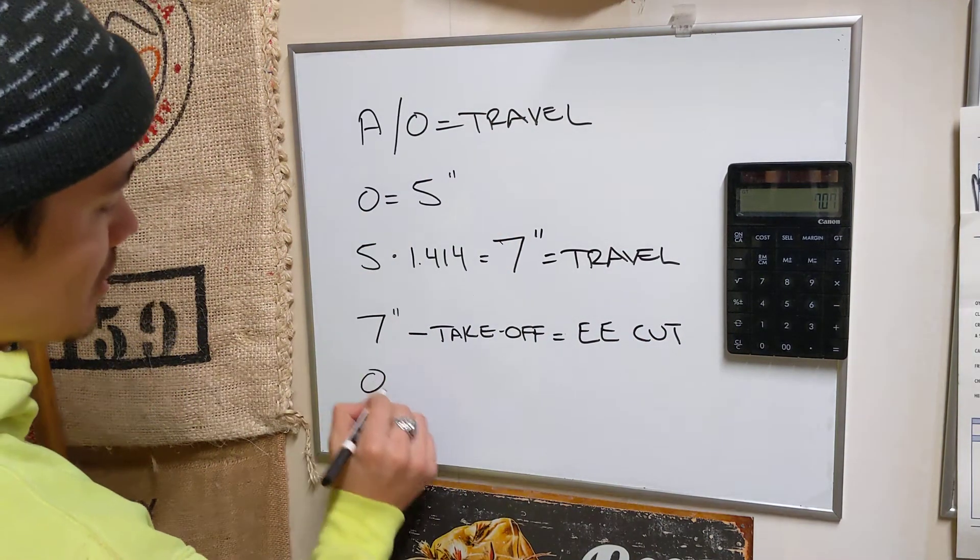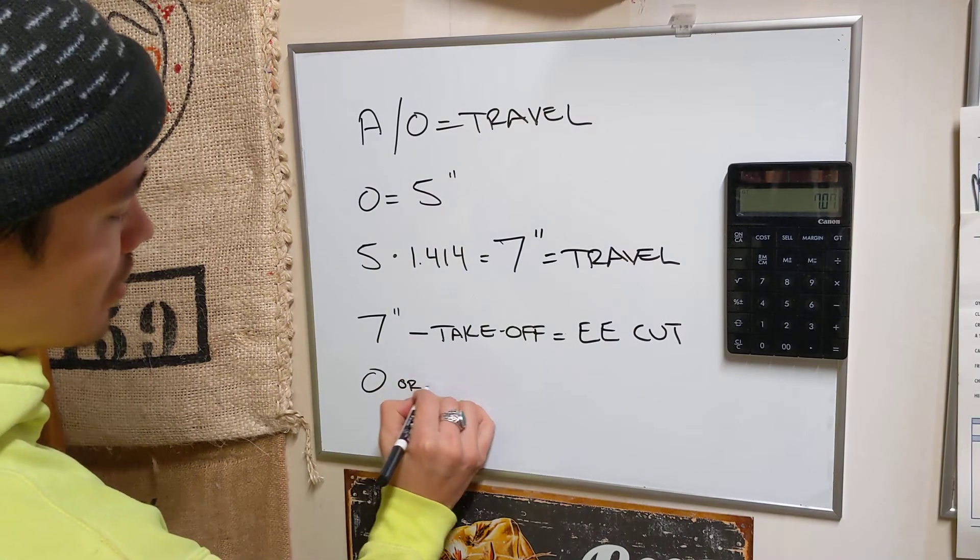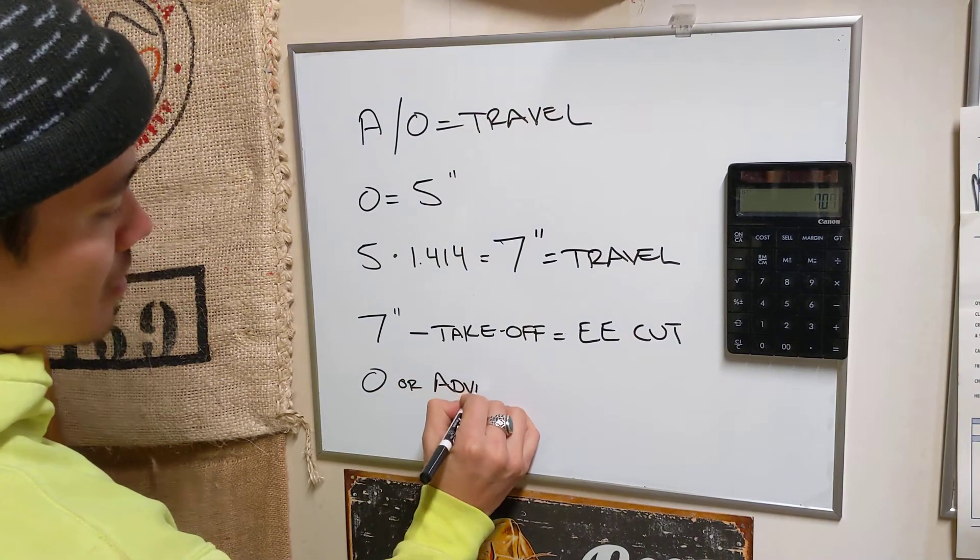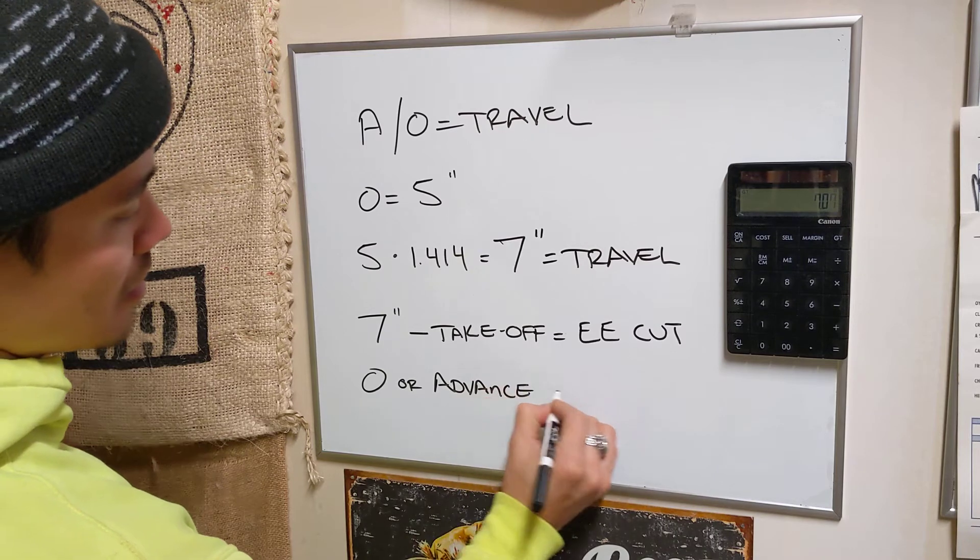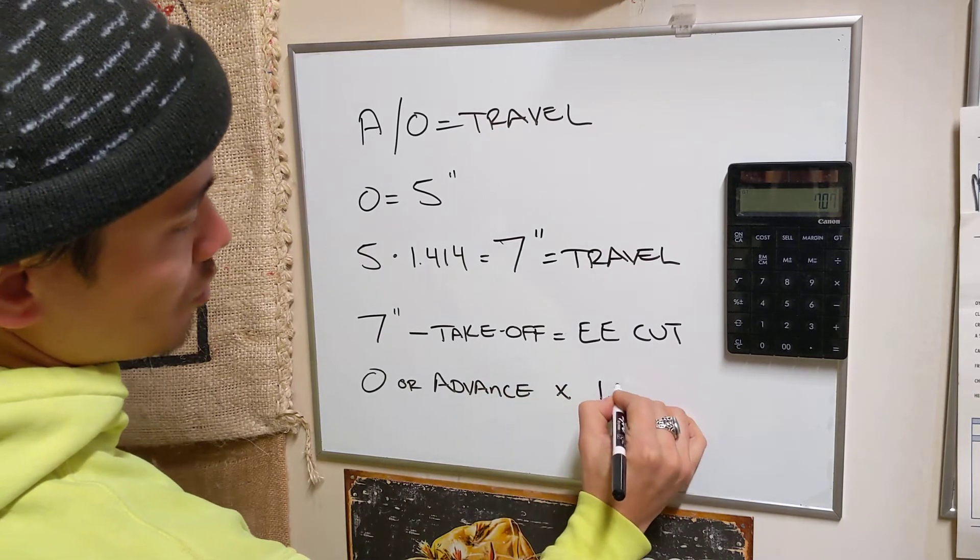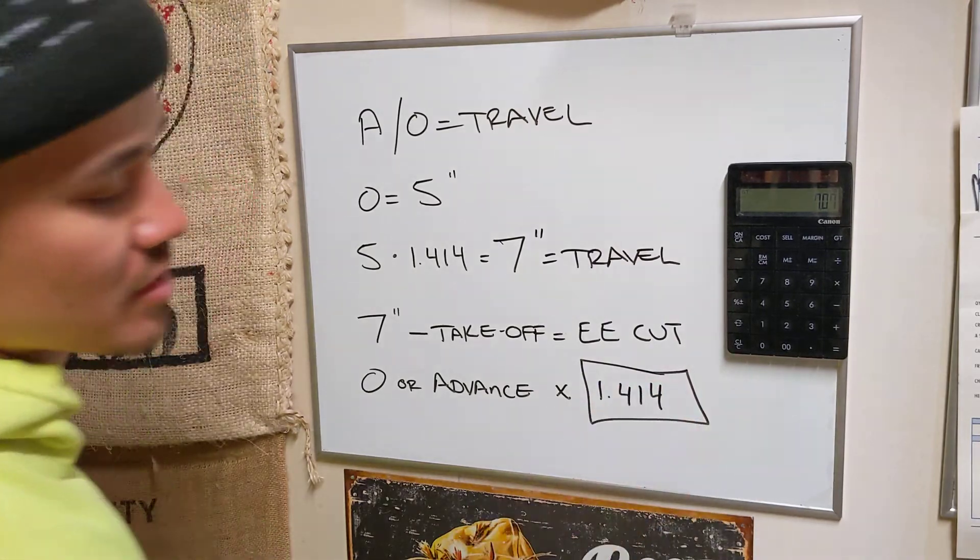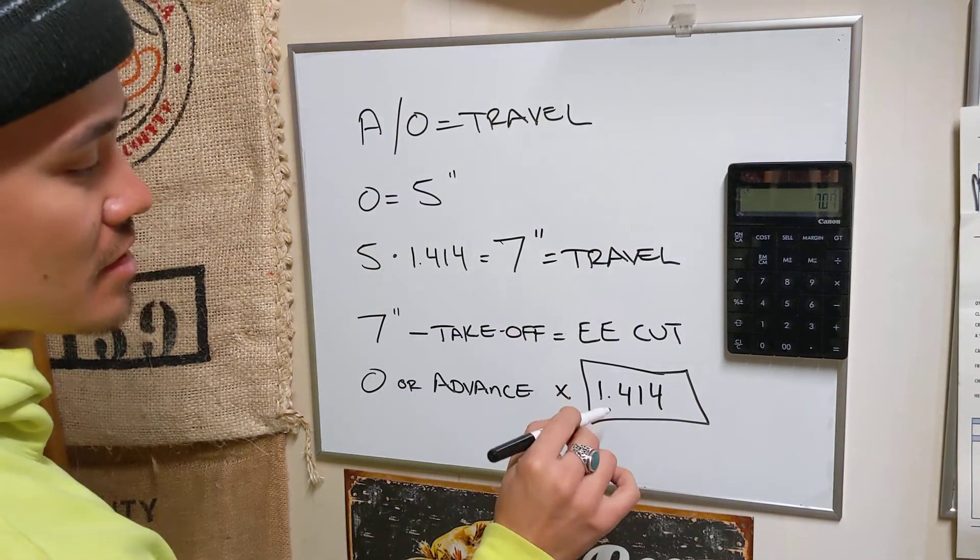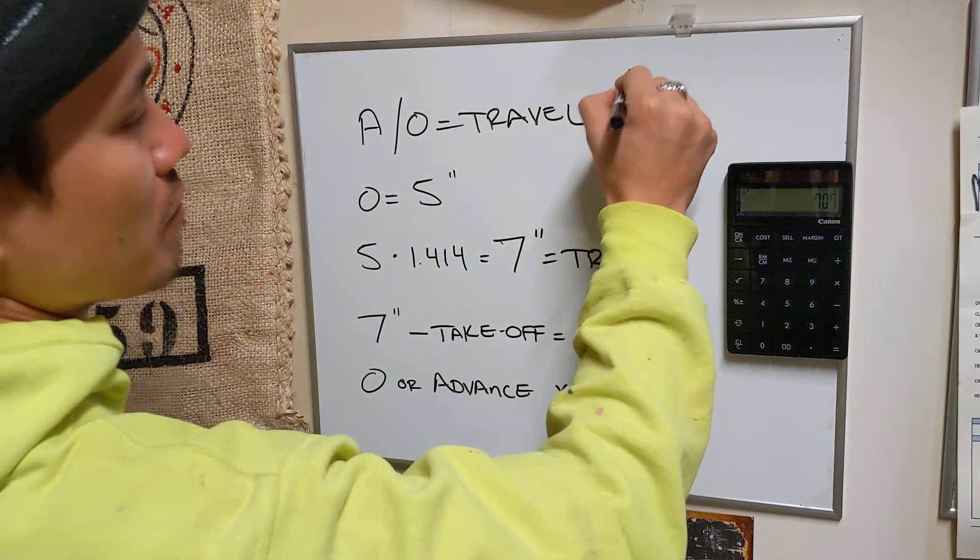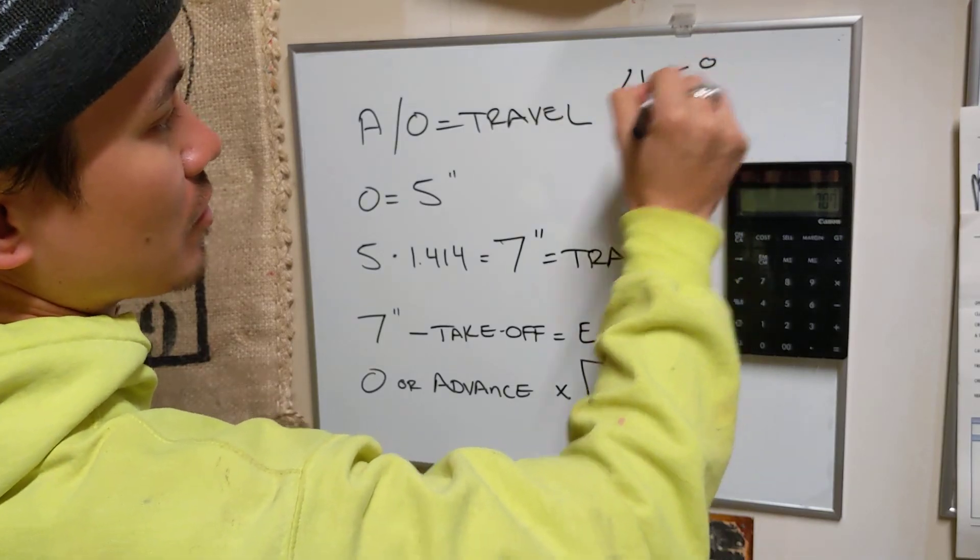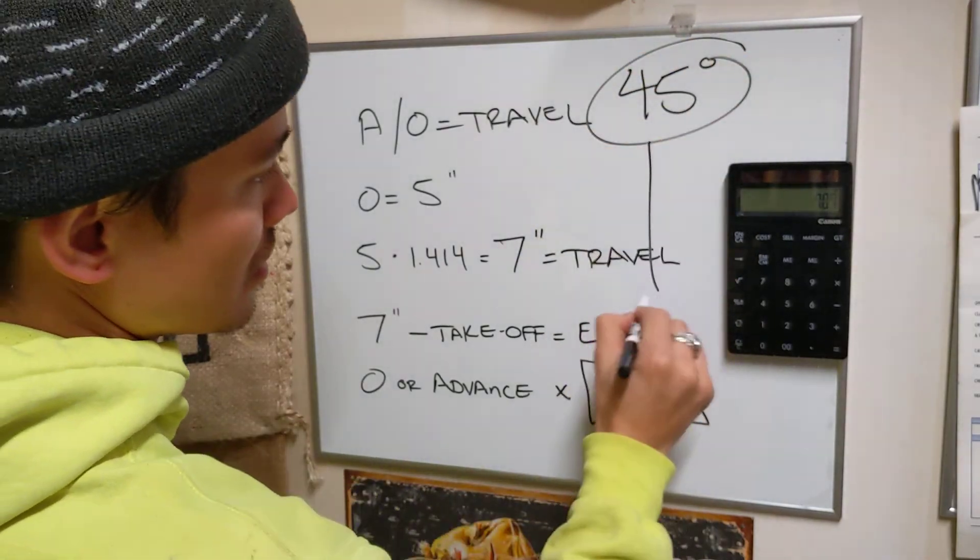You always take your offset or your advance, you multiply that by 1.414. This is the number you should memorize, this is the number you should always know, this is the number you always need for a 45 degree offset. Okay?